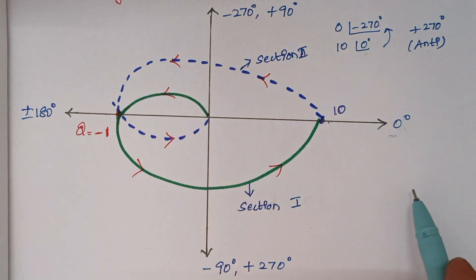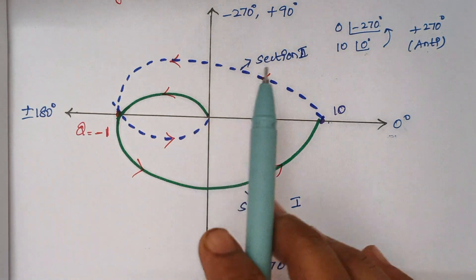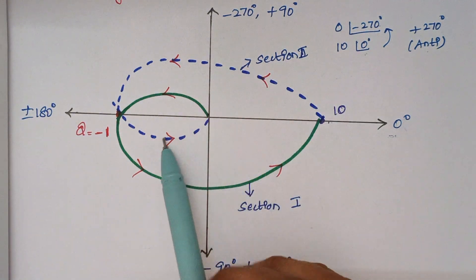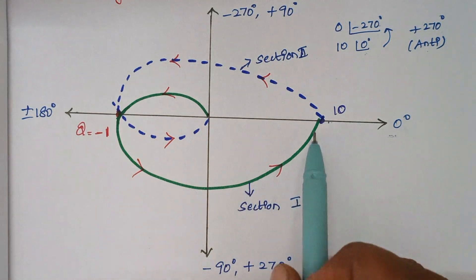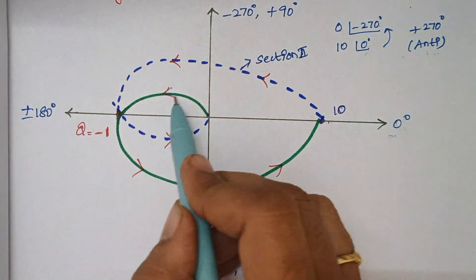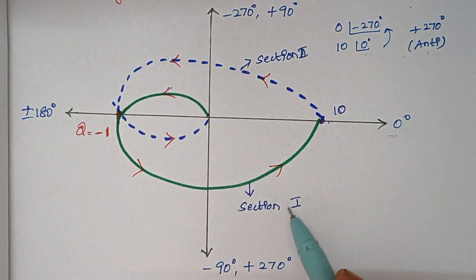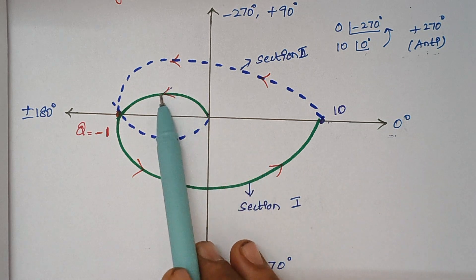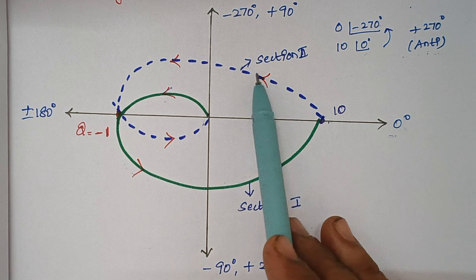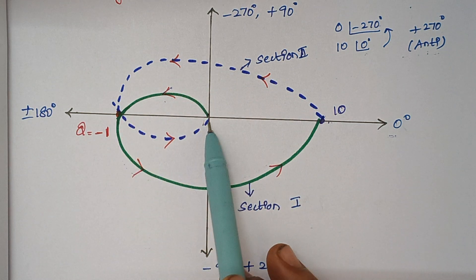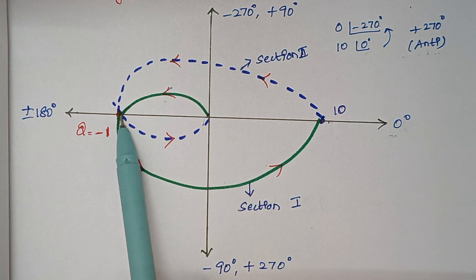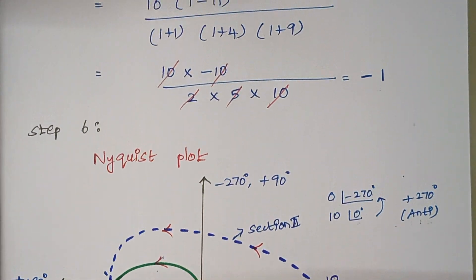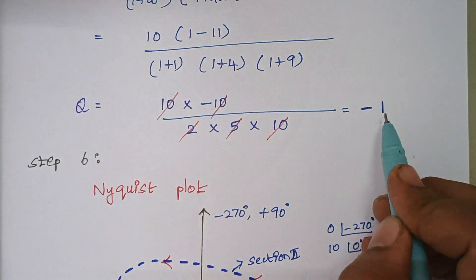Section 2 is the mirror image of section 1, drawn in dotted lines. It is mandatory to mark the arrowheads — without arrowheads your plot is wrong. The direction of rotation for section 1 is anticlockwise, and for section 2 it also moves anticlockwise, and the plot gets completed. The value of Q is −1.